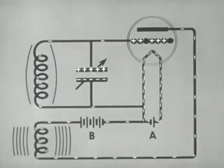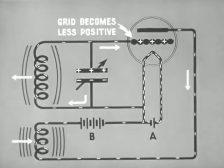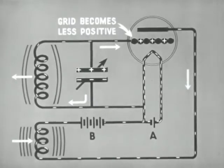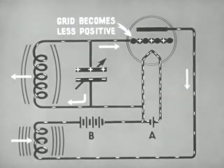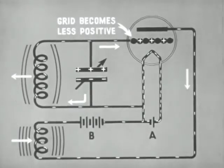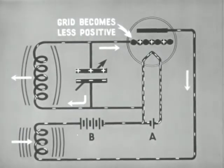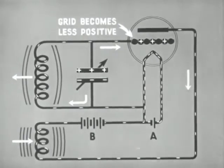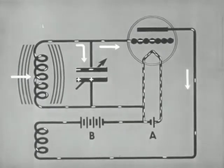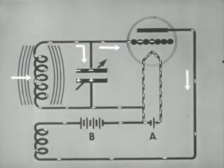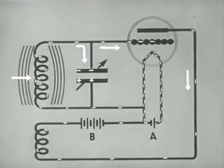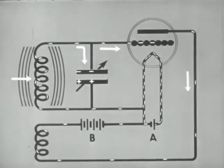Now the condenser discharges and the radio frequency current in the grid circuit changes direction. The grid becomes less positive and this reduces the plate current. The collapsing field of the plate coil assists in building up the current in the grid circuit. As the grid reaches a high negative charge, the plate current is virtually cut off. The field of the grid coil collapses and charges the upper plate of the condenser.